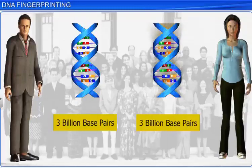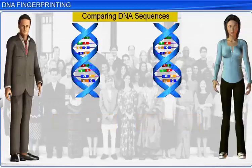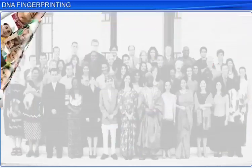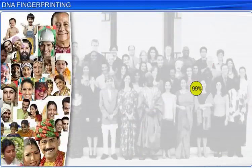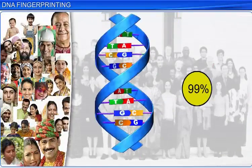An easier and quicker solution to comparing DNA sequences is DNA fingerprinting, which is a test to classify and analyze DNA or the genetic information. In human beings, 99% of DNA base sequences are identical, and are known as the bulk genomic DNA.